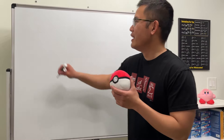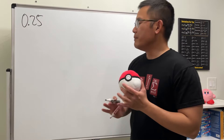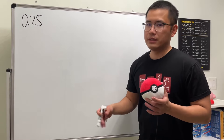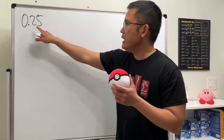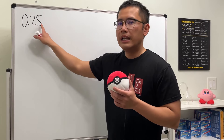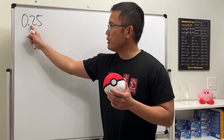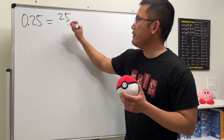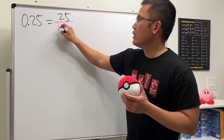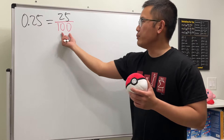This video is about 0.25. First off, if we have 0.25, one of the usual things we do is convert this decimal into a fraction. To do that, we see we have the tenth place here and then the hundredth place here — two numbers after the decimal point. All we have to do is write 25 on top and divide by 100.